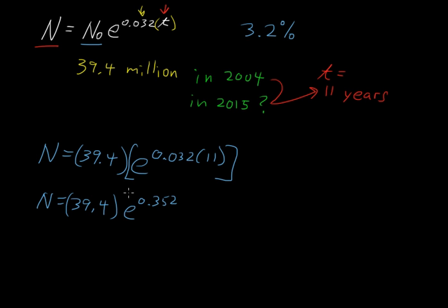Now, very important here, e to the power of exponents before multiplication. So e to the power of 0.352, and then multiply that by 39.4.